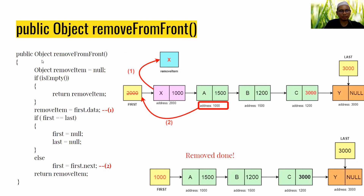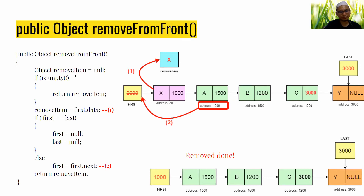For removeFromFront, the method returns an Object type and receives no parameter. First, declare one object called removeItem. Then make sure the list is not empty.